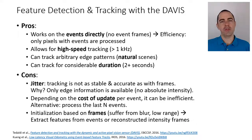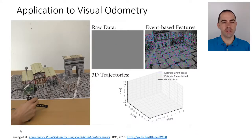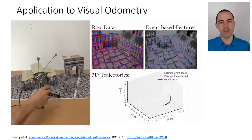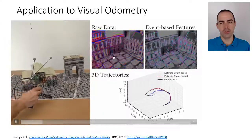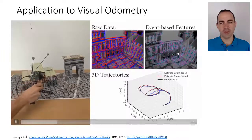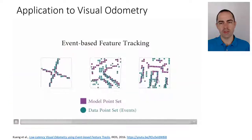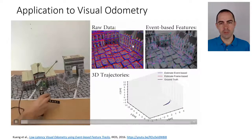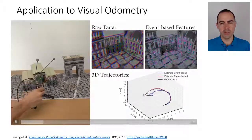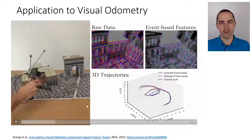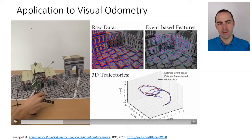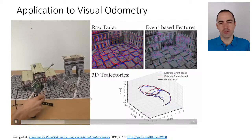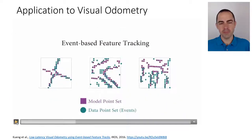Despite these limitations, this tracker is capable enough to enable visual odometry on natural scenes. This video shows a DAVIS camera with input events in red and blue overlaid on the grayscale frames. On the top right, tracked features are shown — green dots are centers, and magenta/cyan points represent the two point sets. The output is a blue estimated trajectory compared to the black ground truth from a motion capture system, showing that features automatically detected in frames and tracked using events can successfully estimate the camera trajectory.